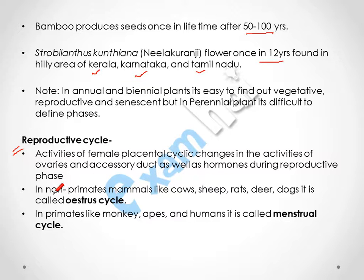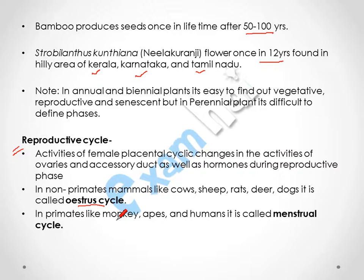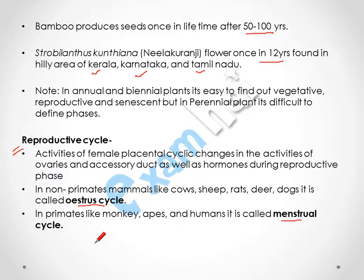In non-primate mammals like cow, sheep, rat, goat, and dogs, this cycle is called the estrus cycle. But in primates like monkey, apes, and humans — where monkeys and apes are ancestors of humans — this cycle is called the menstrual cycle.